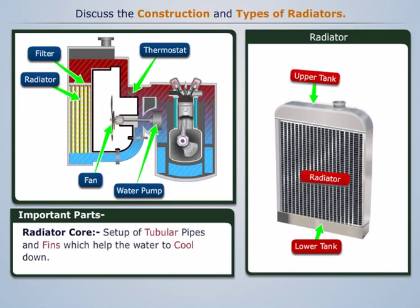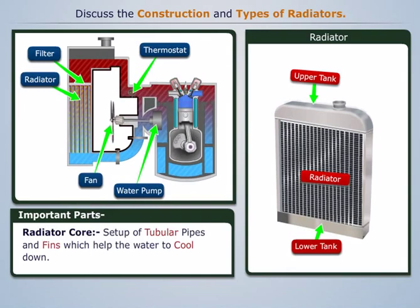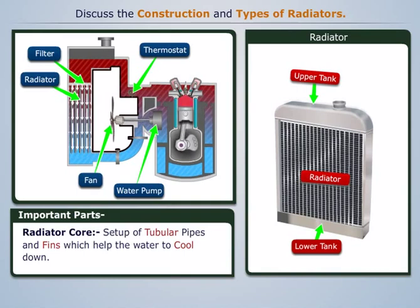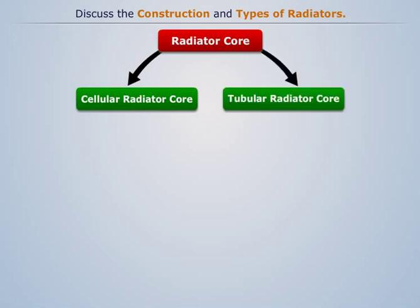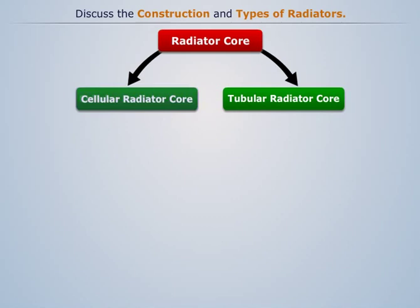The radiator core is a setup of tubular pipes and fins that provides large surface area to the heated water and cools it down rapidly. Many different types of radiator cores are in use these days; however, cellular and tubular are the two main types.